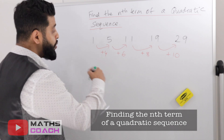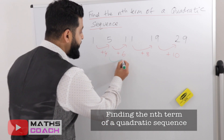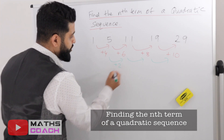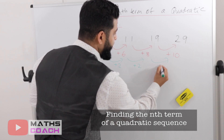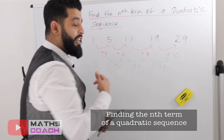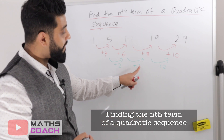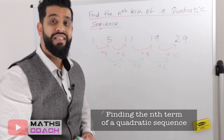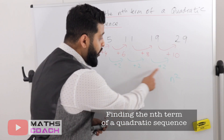What you will do at this stage is find the difference of the differences. From four to six you add two, from six to eight you add two, from eight to ten you add two. This is the difference of the differences. Now half this value — half of two is one — so we write n squared.